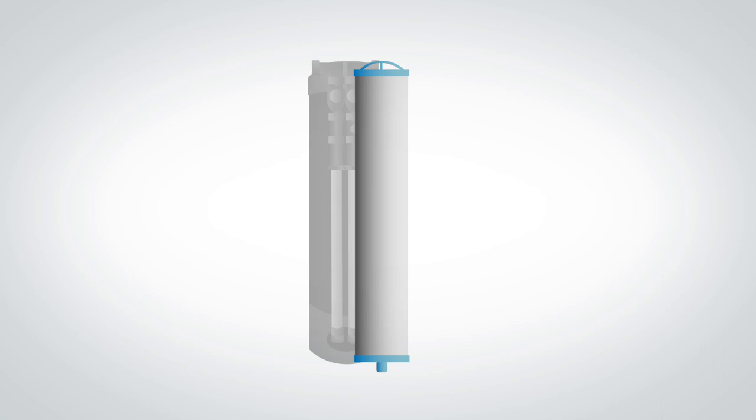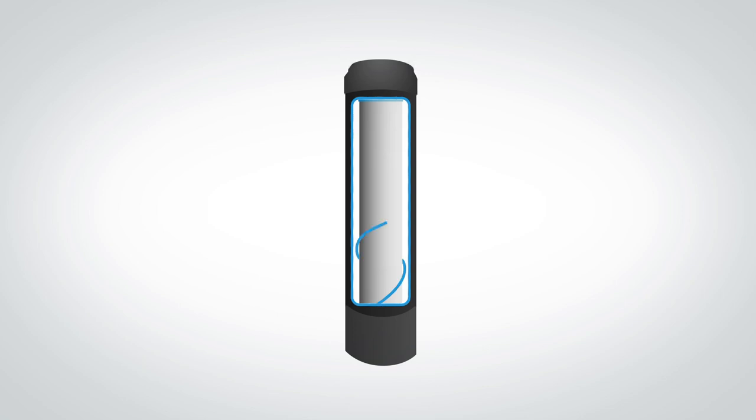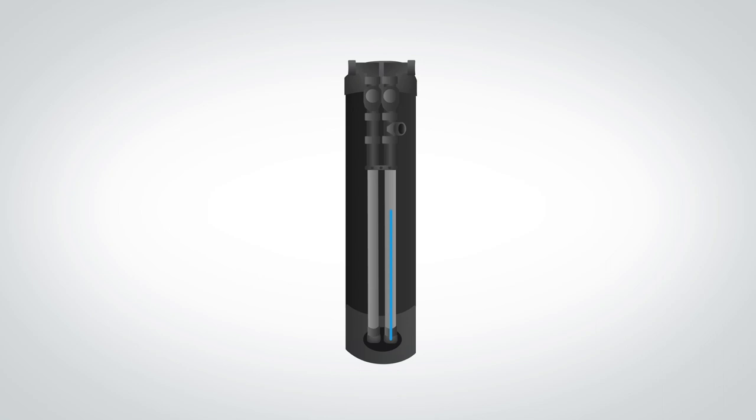The filtration process looks like this. Water enters the tank through the inlet. The water then passes through the carbon block from the outside to the inside, where it makes its way down the riser tube in the center of the filter cartridge and then out to service.